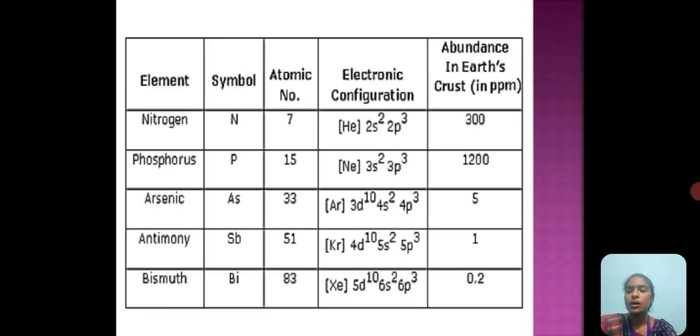These are the basic elements present in group 15: Nitrogen, Phosphorus, Arsenic, Antimony, and Bismuth with atomic numbers 7, 15, 33, 51, and 83 respectively, with the outer electronic configuration of NS2 and NP3 arrangements. The abundance chart shows that phosphorus is the highest abundant in the nitrogen family.